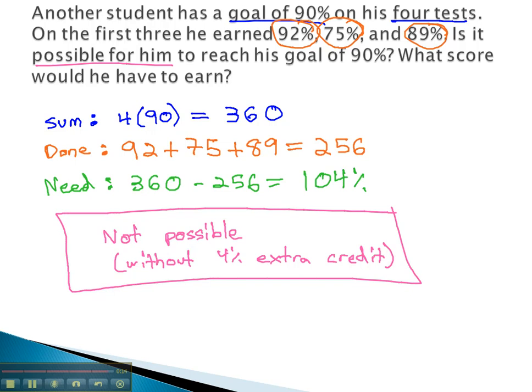So if we have a missing value, we can calculate the sum that we're shooting for by multiplying the number of tests times the average we want, then subtract out what's done to find what we need.